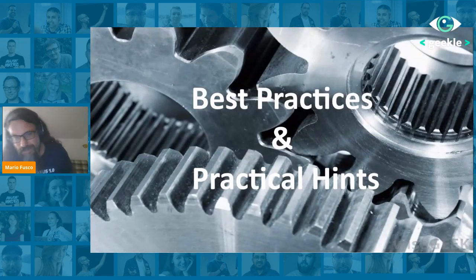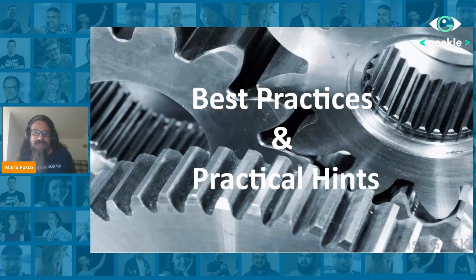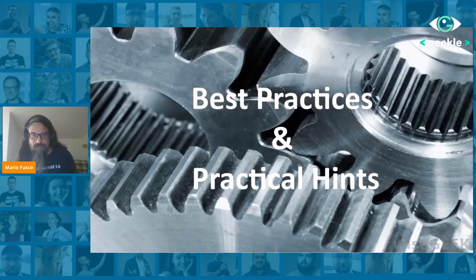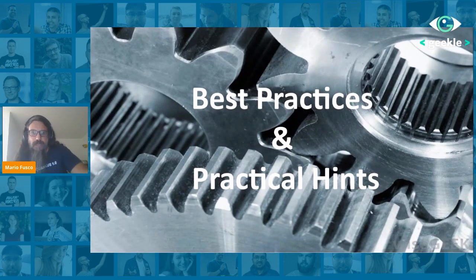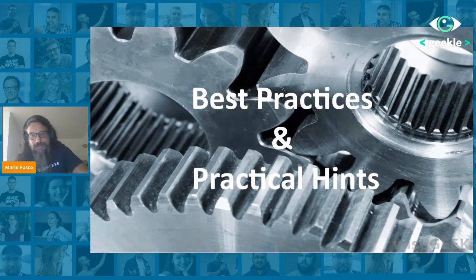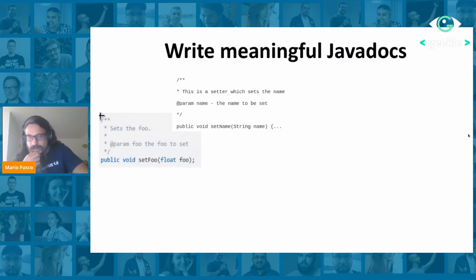So that was the very general overview — what is an API, why you should care, and the basic principles. Now I want to give a few practical hints to you as a Java developer to implement a nice Java API following the principles I mentioned. The very first thing is, of course, documentation.